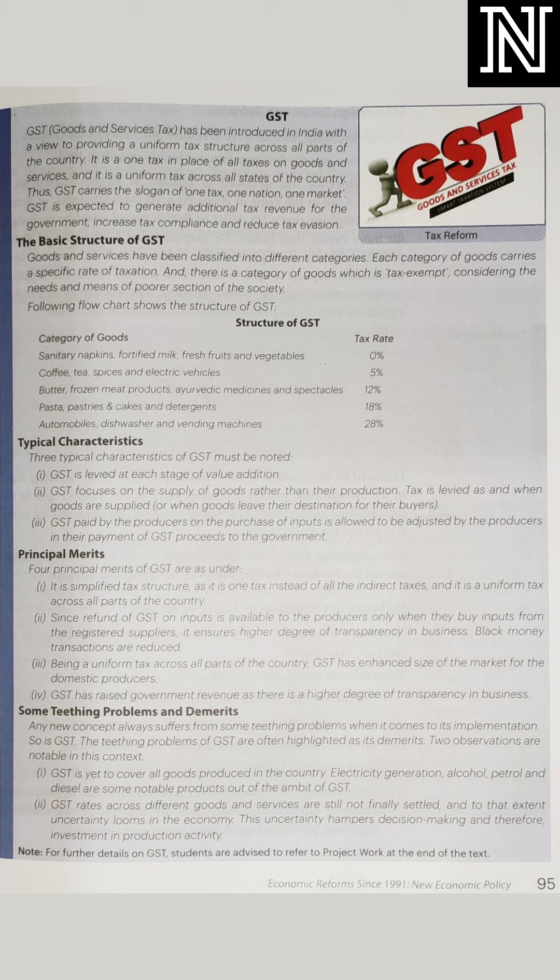GST means goods and service tax, which is introduced by our country government. It submerges all the indirect taxes and makes it one — जिसका दूसरा नाम है uniform tax, एक जैसा tax. One tax, one nation, one market — यह rule बना दिया गया है, slogan है, कि हमारी country में एक ही tax लगेगा, हमारे nation में एक tax लगेगा, हमारे market में एक tax लगेगा. तो GST से government क्या चाहती है? ताकि tax evasion खत्म हो जाए, लोग tax छुपाना बंद कर दें और tax देना चालू कर दें, क्योंकि एक ही tax लग रहा है — इसलिए यह system चालू कराया गया.